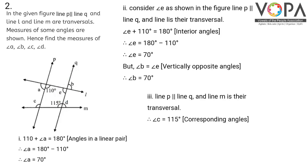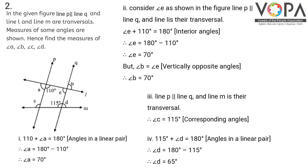Since line P is parallel to line Q and line M is their transversal, angle C is equal to 115 degrees as they are corresponding angles. The 115-degree angle and angle D form a linear pair, so their sum is 180 degrees. Taking 115 to the right-hand side, angle D equals 180 minus 115, which is 65 degrees.